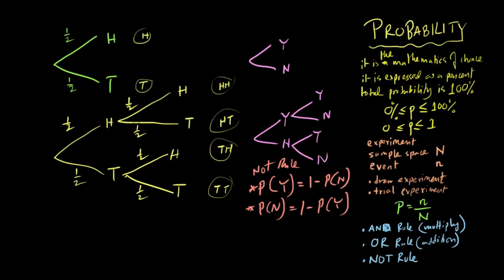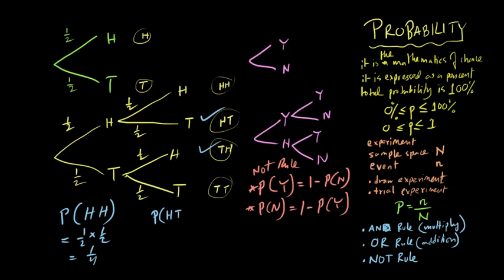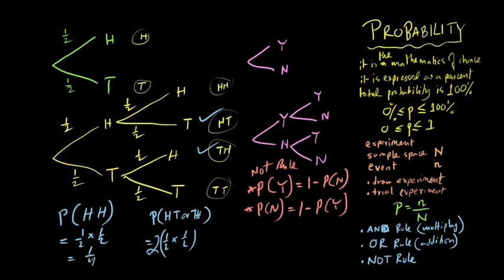Using the tree diagram for actual calculations: the probability of two heads is half times half, which equals one quarter. If the question asks for one head and one tail, there are two permutations — head then tail, or tail then head — so it's half times half, multiplied by two. The basic format of the tree diagram is this yes/no branching structure.